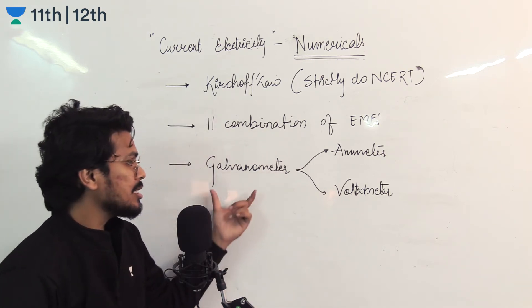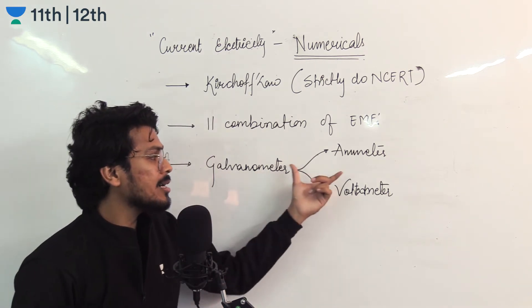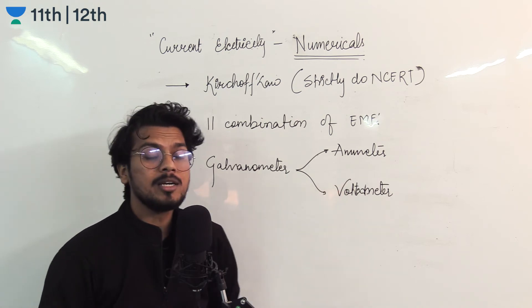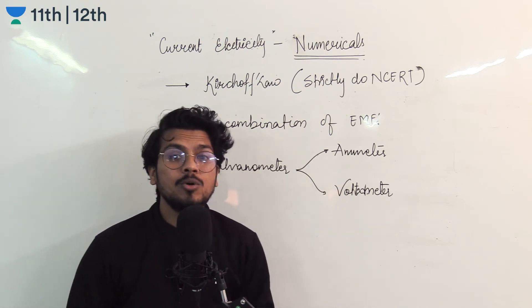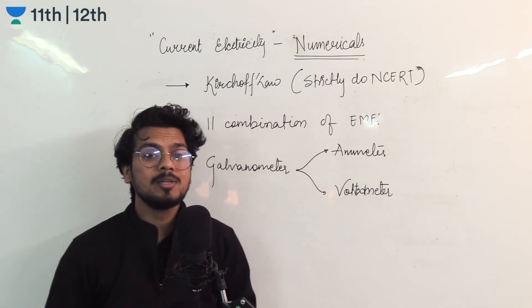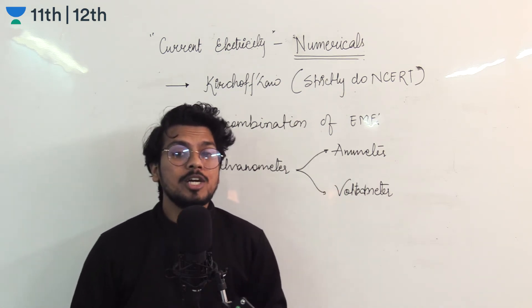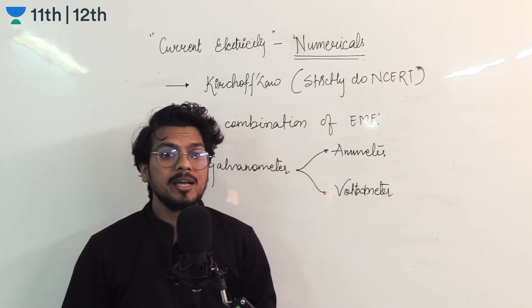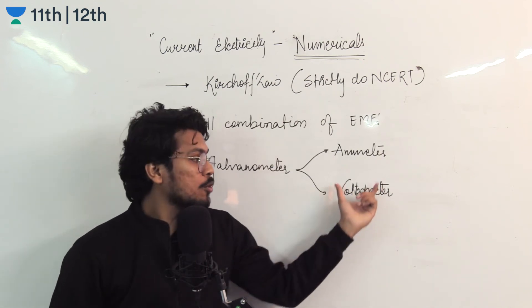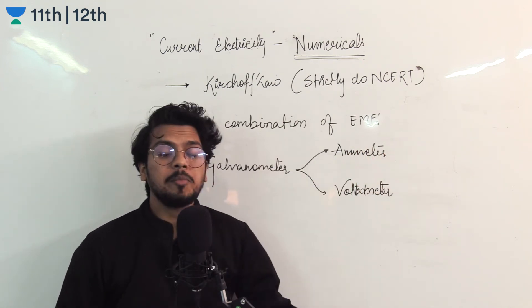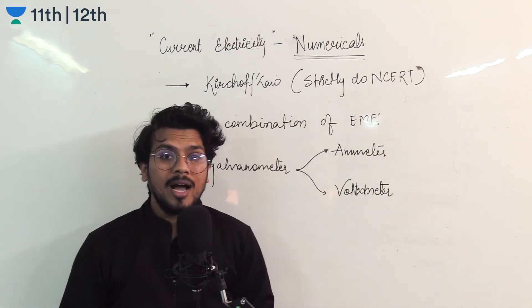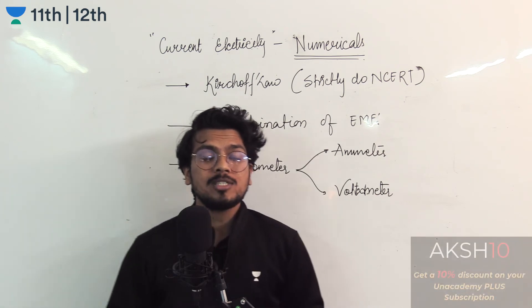The last is: how do you convert a galvanometer into an ammeter and voltmeter? They will ask you how — that means they are asking you the shunt resistance value and how you connect to achieve the voltmeter or ammeter range. I hope that gives you clarity about this chapter.